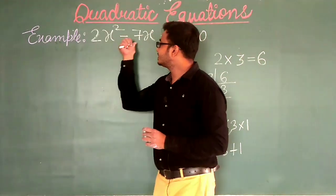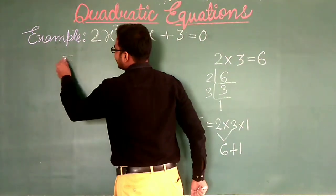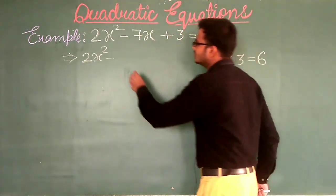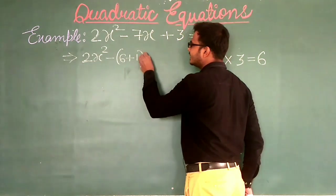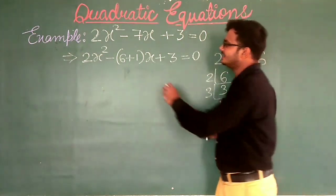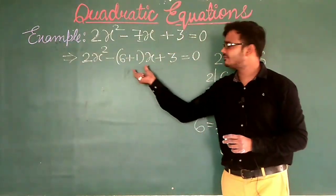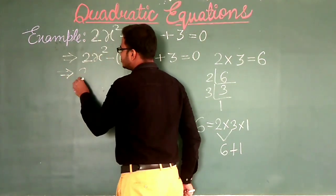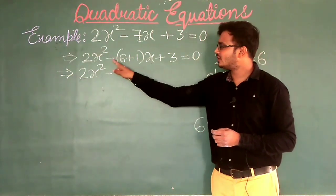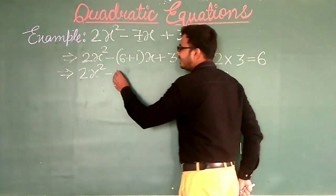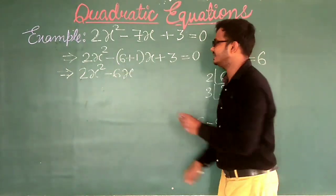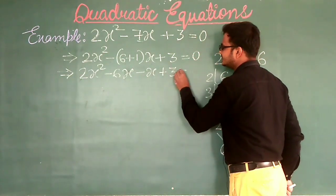Now we will put the value of 7 as 6 plus 1. So the equation becomes: 2X square minus (6 plus 1) X plus 3 is equal to 0. In the next step we open this bracket: 2X square minus 6X minus X plus 3 is equal to 0.